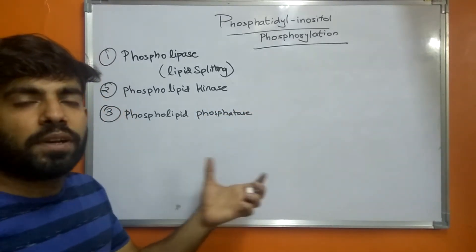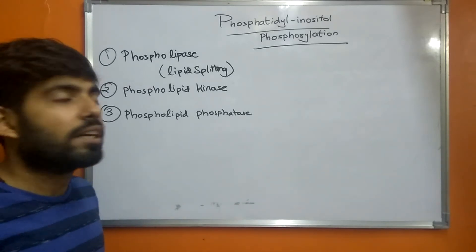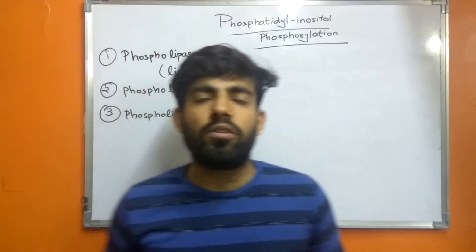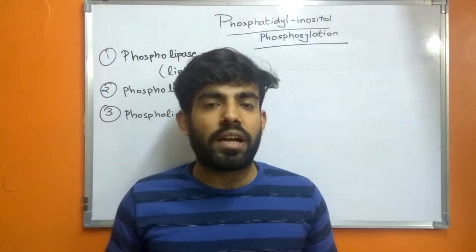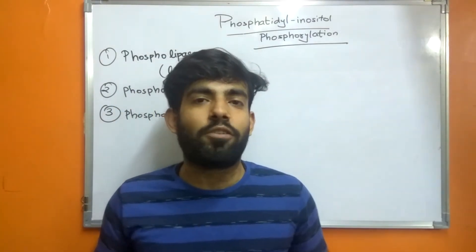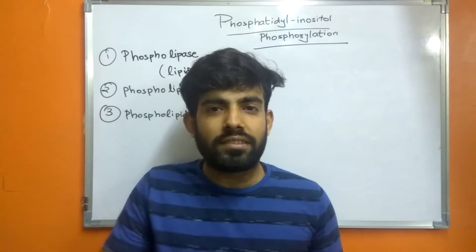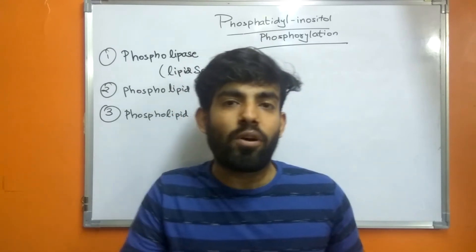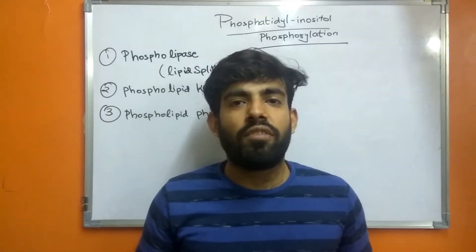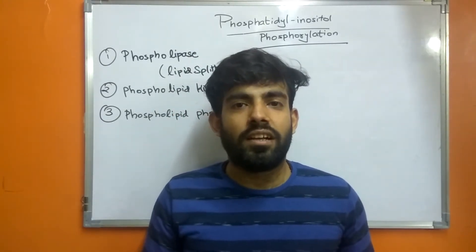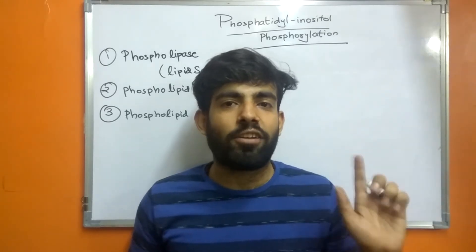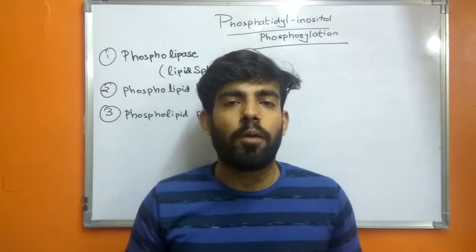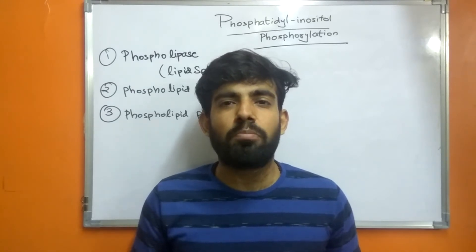In this video we will talk about the derivatives formed from phosphatidyl inositol, and these derivatives function as second messengers. The responses given by the cell due to second messengers derived from phosphatidyl inositol include: first, when acetylcholine binds to the cell surface of a smooth muscle cell,